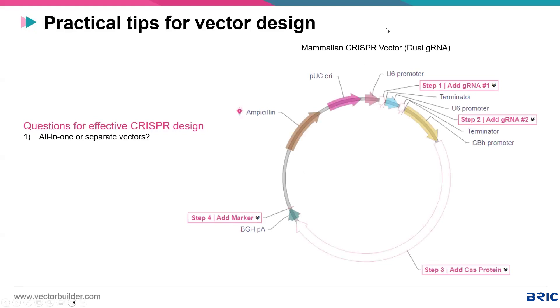Shown here is an example of an all-in-one mammalian CRISPR vector. As you can see, there are two guide RNAs driven by a U6 promoter, and Cas9 is expressed in the same vector — all in one.